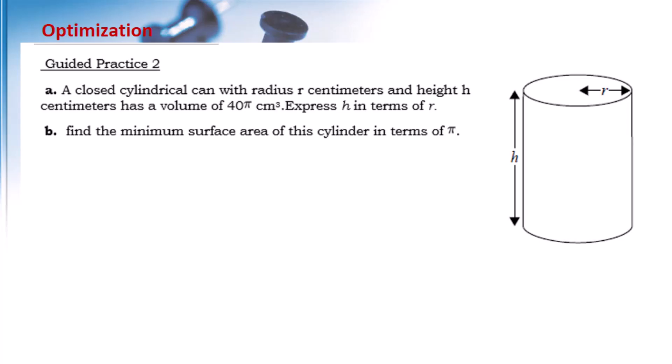Let's go to guided practice 2 about optimization. A closed cylindrical can with radius r centimeters and height h centimeters has a volume of 40π centimeter cubed. Express h in terms of r.